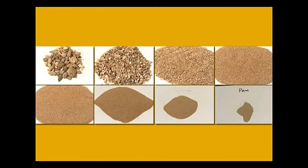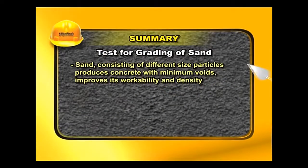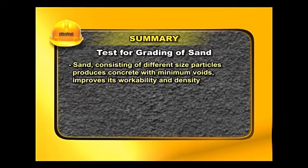The codes of practice specify a percentage to be retained on each sieve. The percentage passing is calculated from the cumulative percentage retained. In case sand does not have the required percentage passing through any particular sieve, sand from a different source can be mixed to make it qualify for the required gradation.